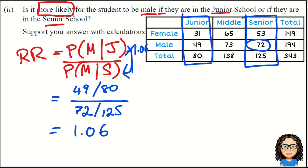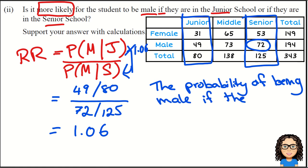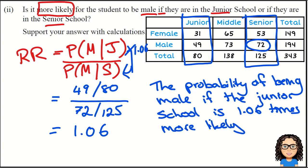That's what I want to write a sentence now to interpret. The probability of being male if they are in the junior school is 1.06 times more likely than if they are in the senior school.